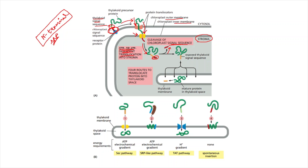What remains is the entire protein with the small yellowish thylakoid signal sequence. Because of this thylakoid signal sequence, the protein will further get translocated into the thylakoid. After translocation into the thylakoid, this yellowish thylakoid signal sequence will be removed — it is only removed after translocation within the thylakoid.